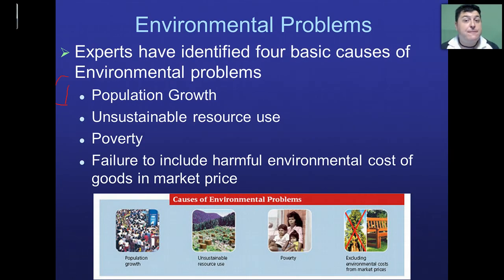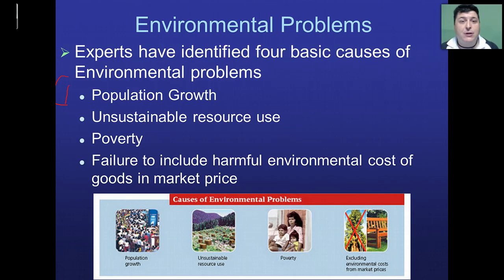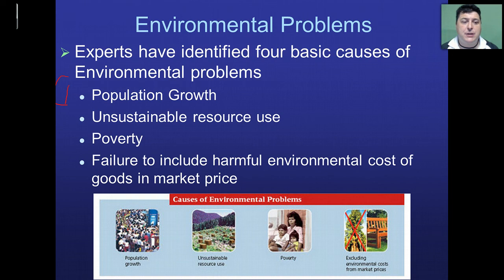Experts have identified four basic causes of our environmental problems. At the top of the list is population growth. With seven billion people on the planet and more arriving every day than are dying, each person requires resources and impacts the environment, so we have to think about how we can manage our population.